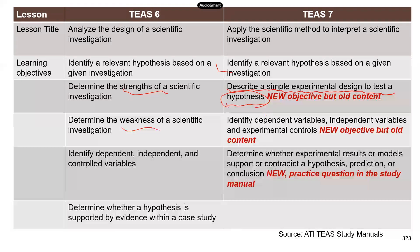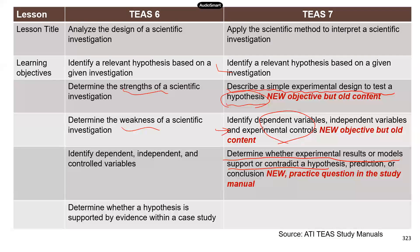So this is really not new — don't think that you have to learn a lot of new information. The next learning objective in TEAS 7 is to identify dependent variables, independent variables, and experimental controls — all things that have been mentioned in TEAS 6 and included in the science practice questions. The last learning objective in TEAS 7 is to determine whether experimental results or models support or contradict a hypothesis, prediction, and conclusion, which we touched on in lesson 26.